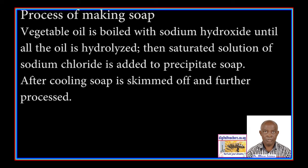Process of making soap: Vegetable oil is boiled with sodium hydroxide until all the oil is hydrolyzed. Then a saturated solution of sodium chloride is added to precipitate soap. After cooling, soap is skimmed off and further processed.